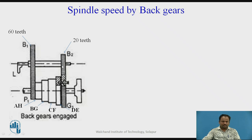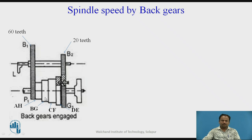With the pinion driving the bull gear, the reduction factor is 20/60 × 20/60. If we multiply this factor with each cone pulley spindle speed, then we get four additional different spindle speeds — one for each cone pulley position.